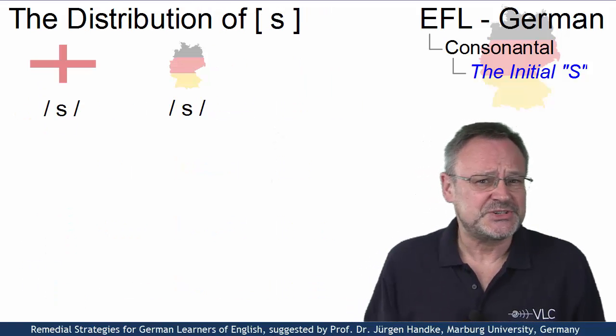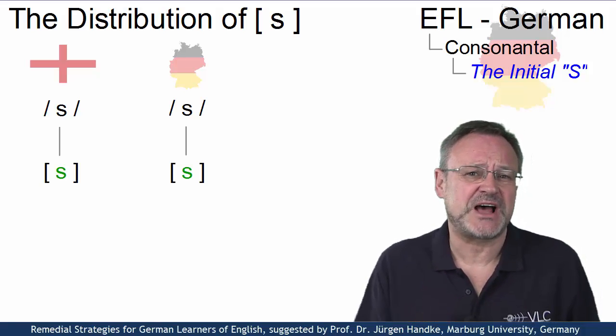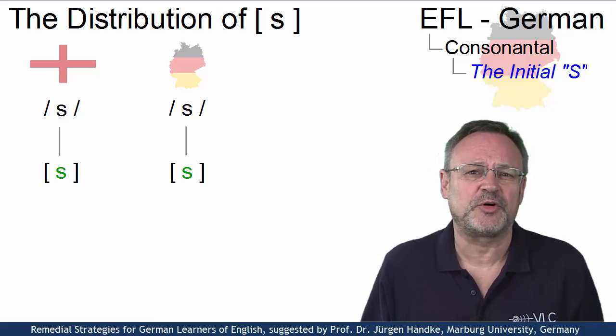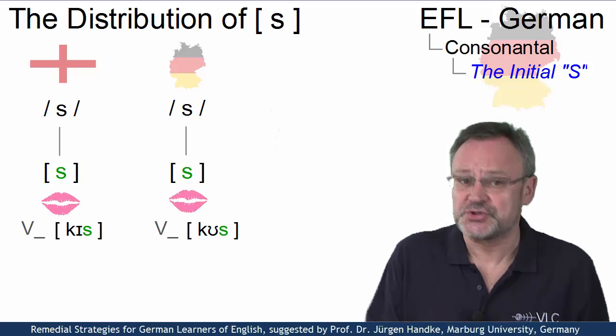The problem is a distributional one. Both English and German have a voiceless alveolar fricative as an allophone of the phoneme S, as in English Kiss and its German equivalent Kuss.